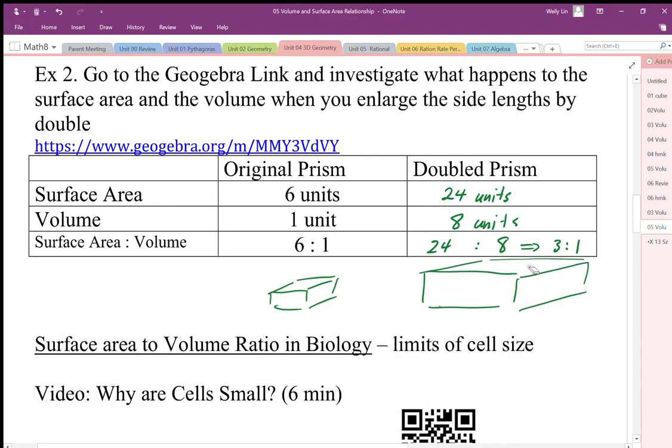So this surface area to volume ratio changes. Bigger objects have less surface area to volume ratio. Although they have more total surface area, the ratio of how much volume is inside means there's less surface for each amount of volume.